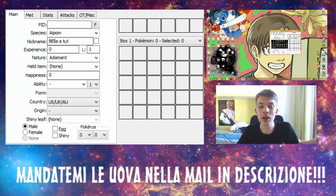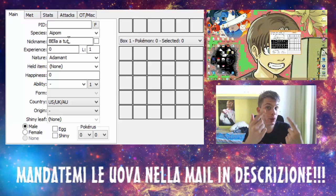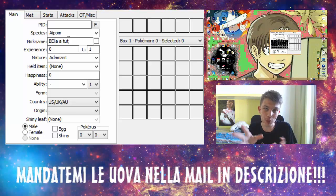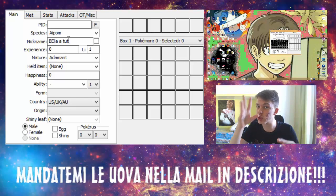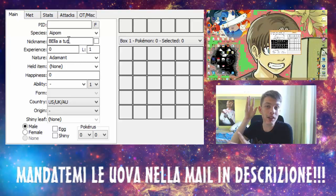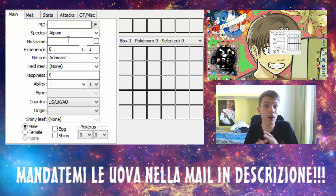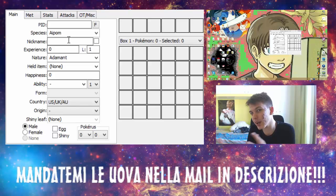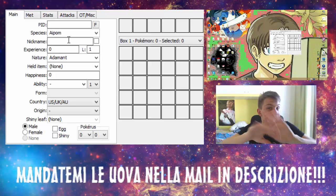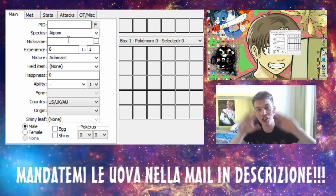Il Pokemon che uscirà da quell'uovo avrà per l'appunto il soprannome dell'uovo. Vi invito ragazzi a mettere tutti un soprannome che non identifichi troppo facilmente il Pokemon. Perché se non lo mettete, l'uovo si chiamerà quasi automaticamente con il nome del Pokemon, tipo Electivire, e ci spoilereremo l'uovo. Quindi mettete i soprannomi, anche se non avete idea, cercateli su internet.